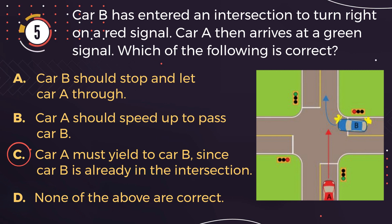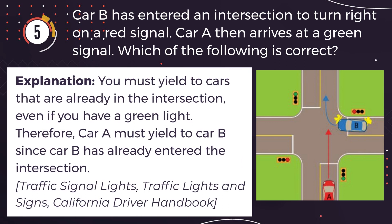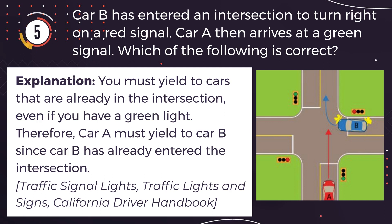The correct answer is C: Car A must yield to car B, since car B is already in the intersection. Explanation: You must yield to cars that are already in the intersection, even if you have a green light. Therefore, car A must yield to car B since car B has already entered the intersection.